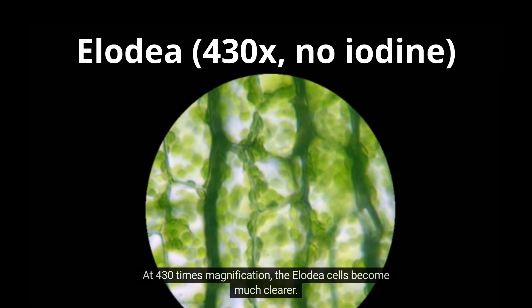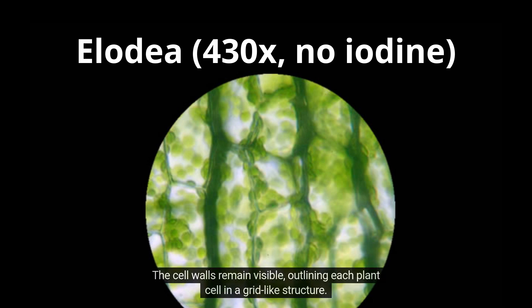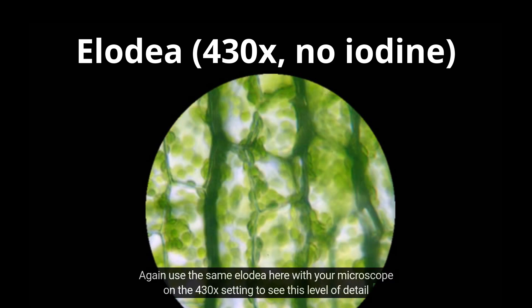At 430 times magnification, the Elodea cells become much clearer. You can see individual chloroplasts more distinctly. In a live sample, these chloroplasts often move around the inside of the cell in a process called cytoplasmic streaming. The cell walls remain visible, outlining each plant cell in a grid-like structure. Use the same Elodea here with your microscope on the 430x setting to see this level of detail.